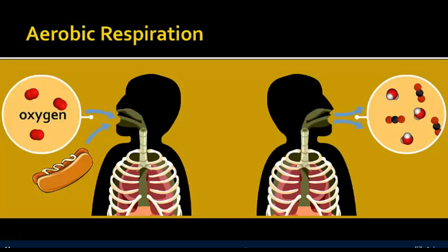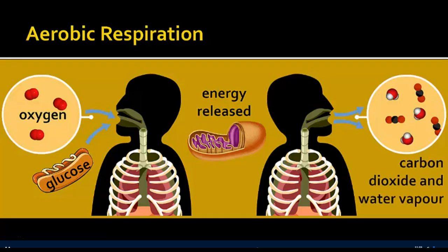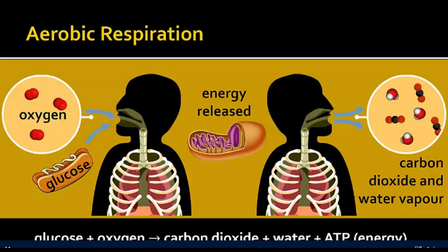Oxygen, which we breathe in, is formed by photosynthetic organisms through photosynthesis. We also need glucose — sugar from food we eat — which then releases energy in the mitochondria through respiration. That energy released is in the form of ATP, the cell's usable form of energy, and also produces byproducts like carbon dioxide and water vapor. The formula is essentially the opposite of photosynthesis: glucose plus oxygen is converted into carbon dioxide plus water and ATP.